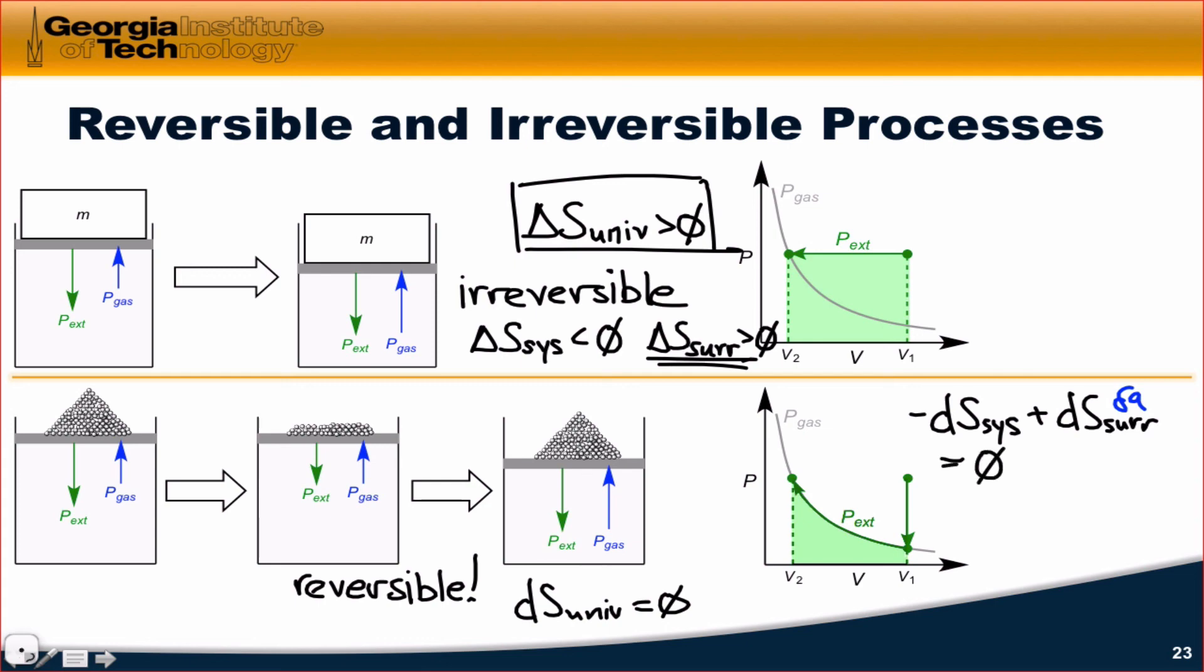So we do these infinitesimal additions of infinitely tiny grains of sand over and over again and what we find ultimately is that delta S for the universe is equal to zero. Now, of course, this is not a physically allowed situation. For this to be able to occur physically, the grains of sand would have to have infinitely small mass, which is impossible.